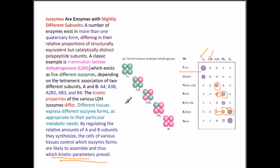The affinity with the substrate and productivity vary depending on the demand of each cell type — muscle cells, heart cells, and brain cells each need different performance. This subunit arrangement is tightly controlled by the cell type, as demonstrated by the lactate dehydrogenase example.